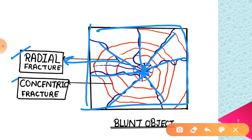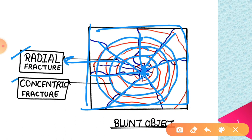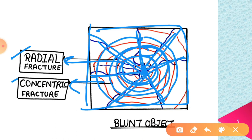What is concentric fracture? Concentric fractures are those fractures which form circles around the particular point of impact. Here you can see the circular patterned fractures — these are the type of concentric fractures. So here are both the radial lines that radiate outwards from the point of impact, and the concentric fractures which encircle the point of impact.